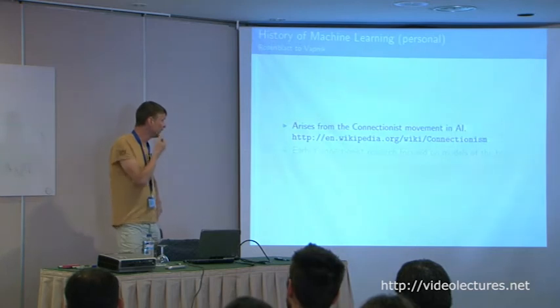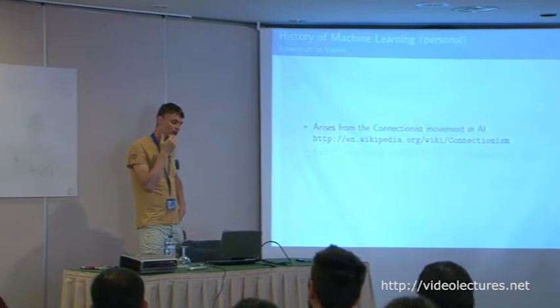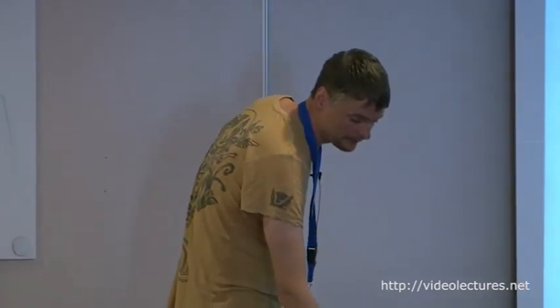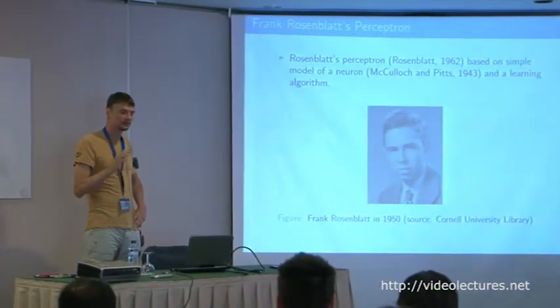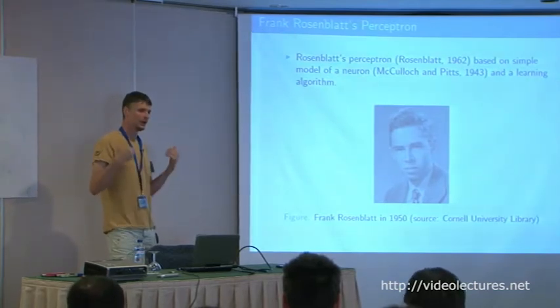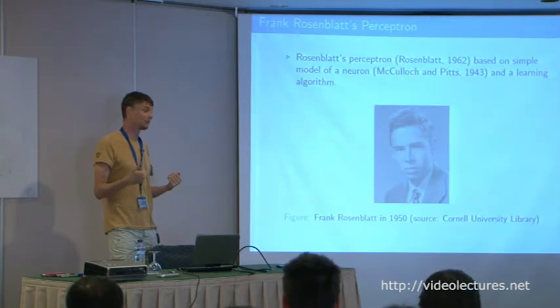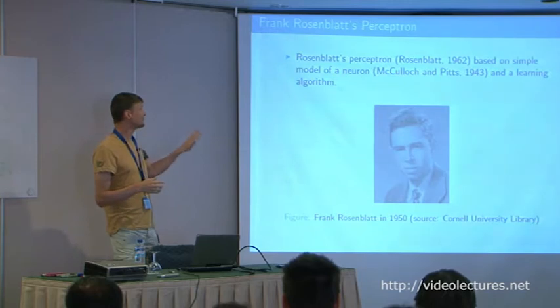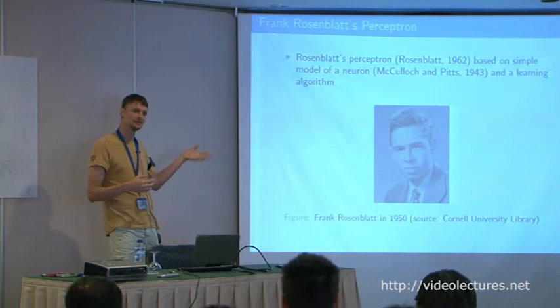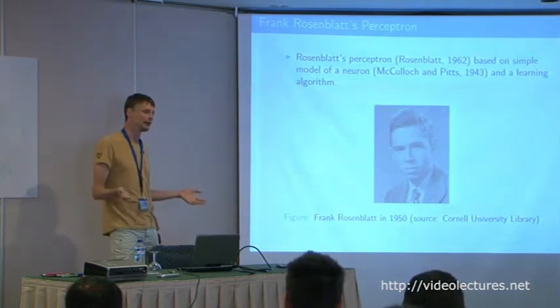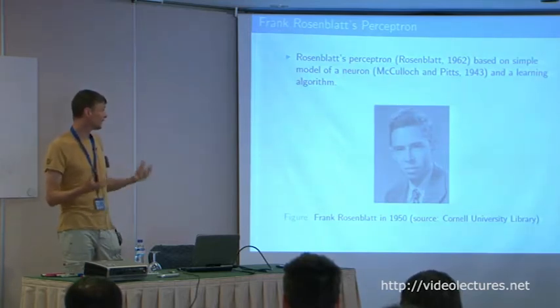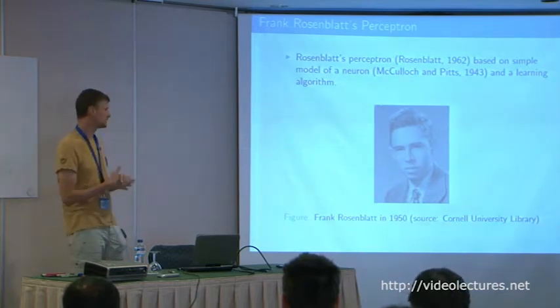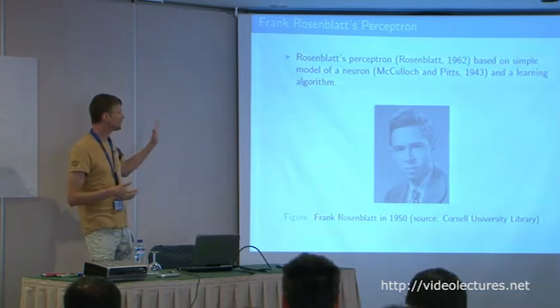People were interested in building computer models with similar characteristics, and the movement was called connectionism. Connectionism was the dominant force in machine learning in the late 1990s, driven by ideas of models of the brain. In particular, Rosenblatt built the so-called perceptron — a learning system that could classify digits, even based on a very simple model of a neuron. In 1962, you could do a bit of learning based on a model of the brain. People were looking at extending the perceptron, and the big step forward was the multilayer perceptron — the neural network — for nonlinear classification.